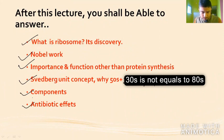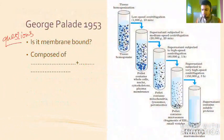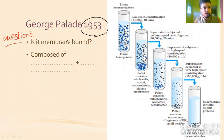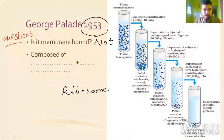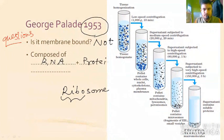In 1953, George Palade discovered this particular organelle by centrifugation separation. He found that it is not a membrane-bound organelle, and it is composed of two basic things: as the name says — ribosome — it comprises ribonucleic acid, mainly nucleic acid, and different types of proteins. These are the basic components.